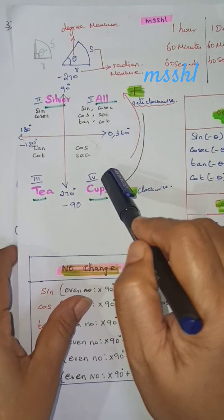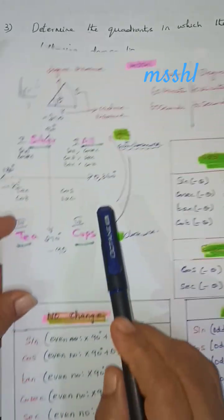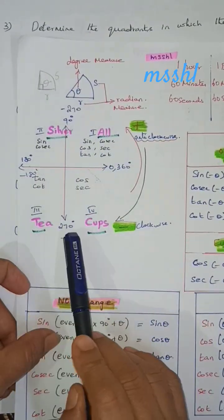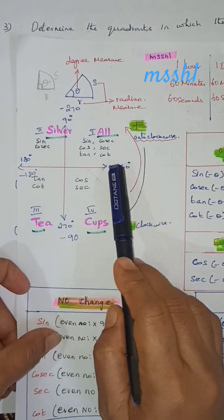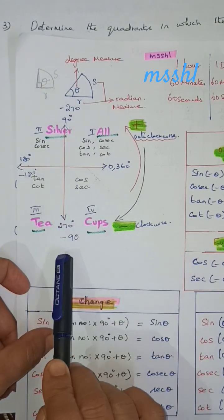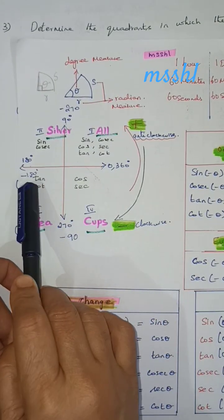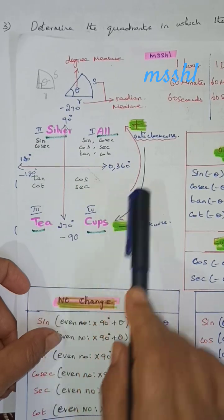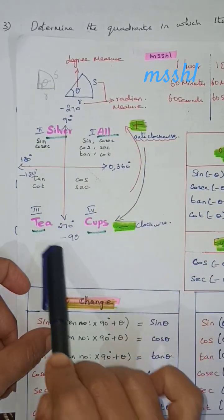So the first example is 380 degrees. Going anti-clockwise: 0, 90, 180, 360. Clockwise is 0, minus 90. Plus 90 is minus 90. Plus 180 is minus 180. Minus 270. Minus 360. Anti-clockwise is positive, clockwise is negative.